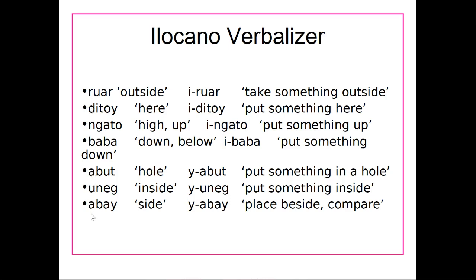'Abut,' 'uneg,' and 'abe' all start with a vowel. So basically what's happening is: if the word starts with a consonant, it gets the 'e' form of the verbalizer; if it starts with a vowel, it gets the 'ya' form of the verbalizer. So there is a phonological condition telling us which form of the verbalizer to use.